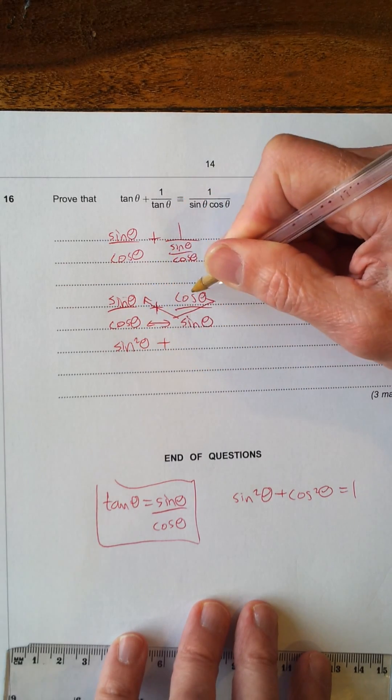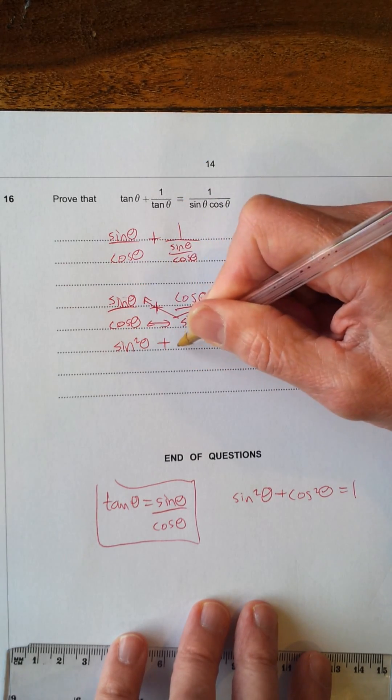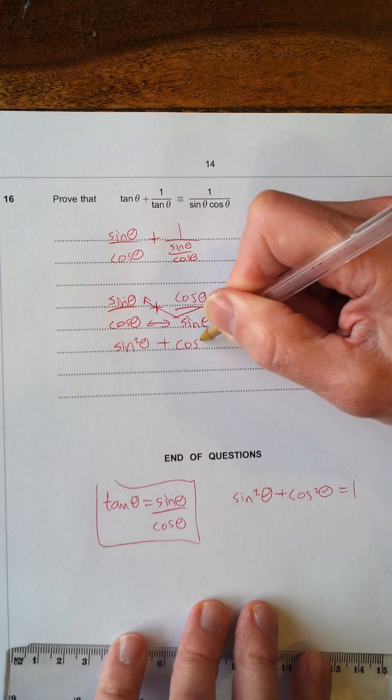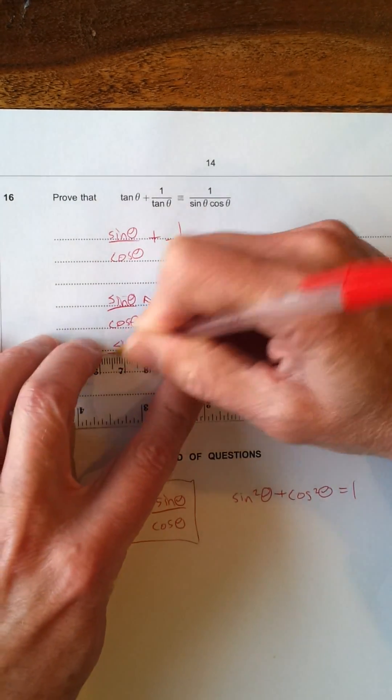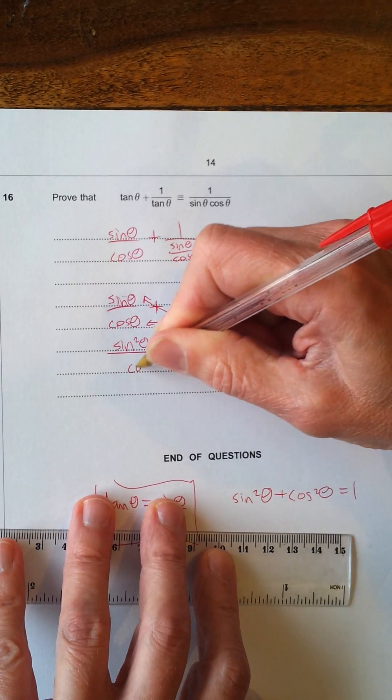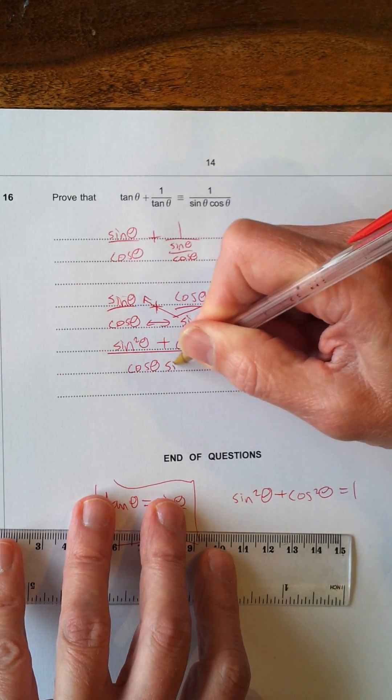And they go together to make cos θ sin θ.